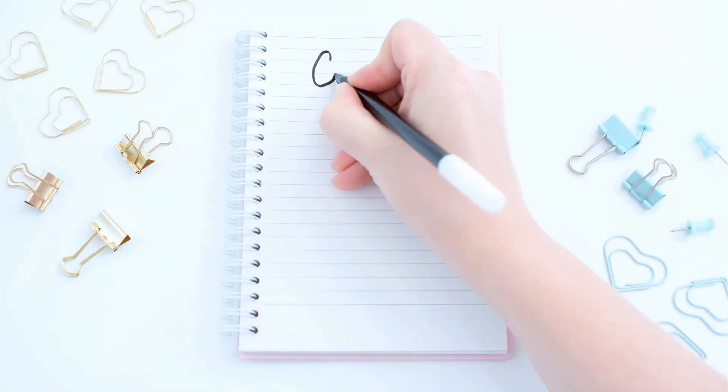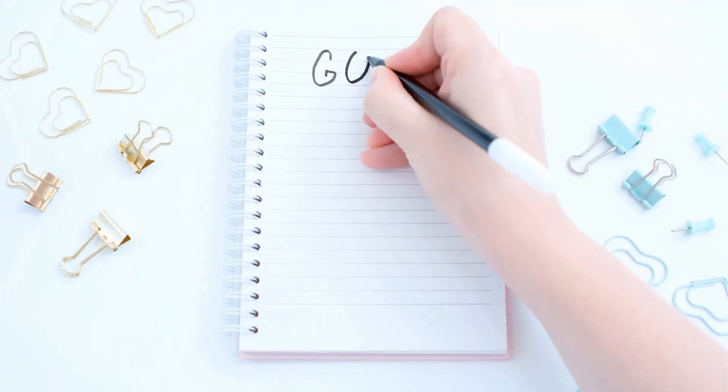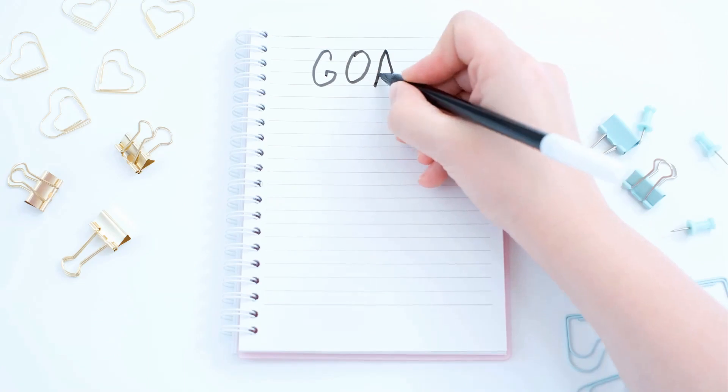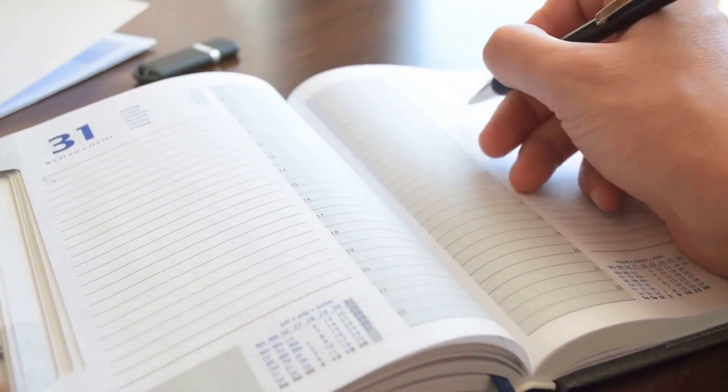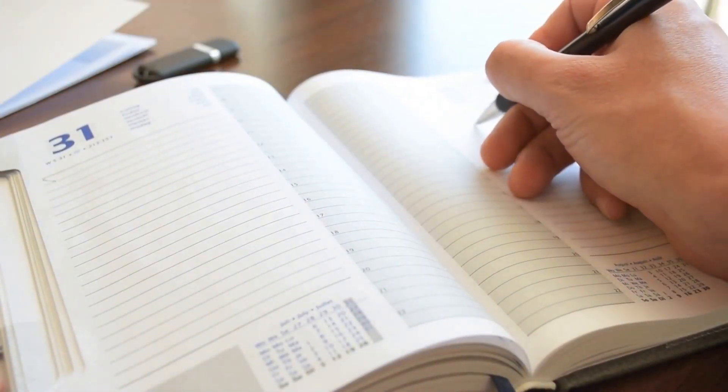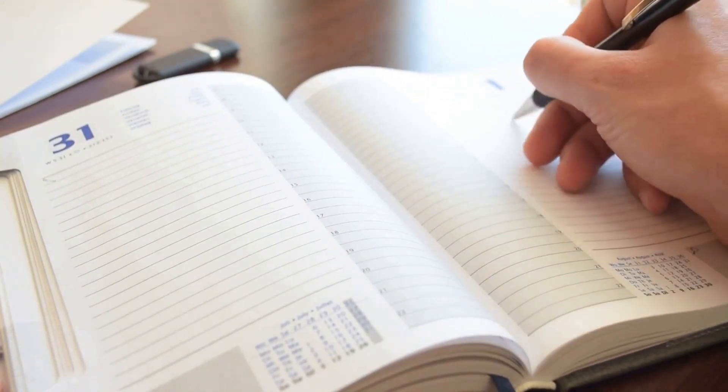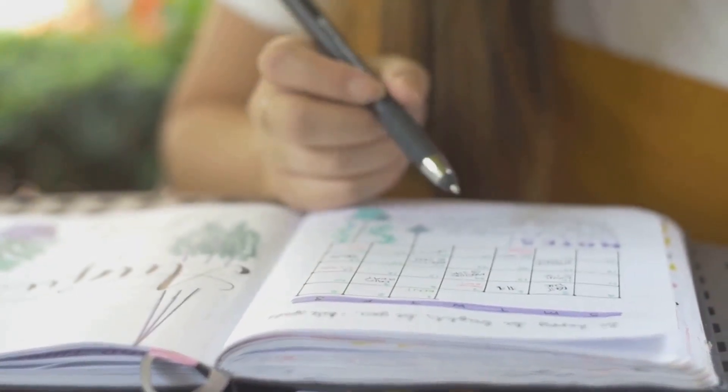Take some time to reflect on what you truly want to achieve. What are your goals? What are your dreams? What is it that you want to spend your time on? Once you have a clear vision of what you want, start aligning your time with those goals.